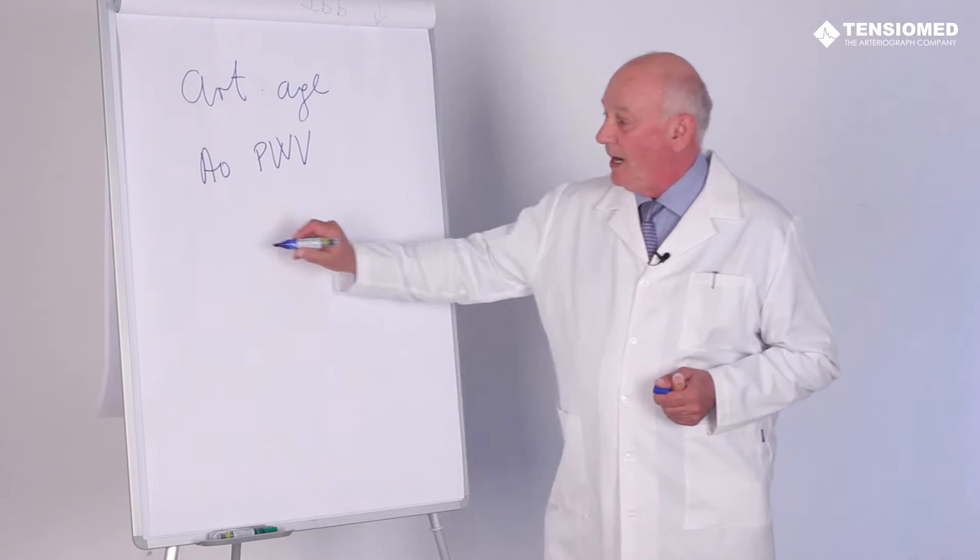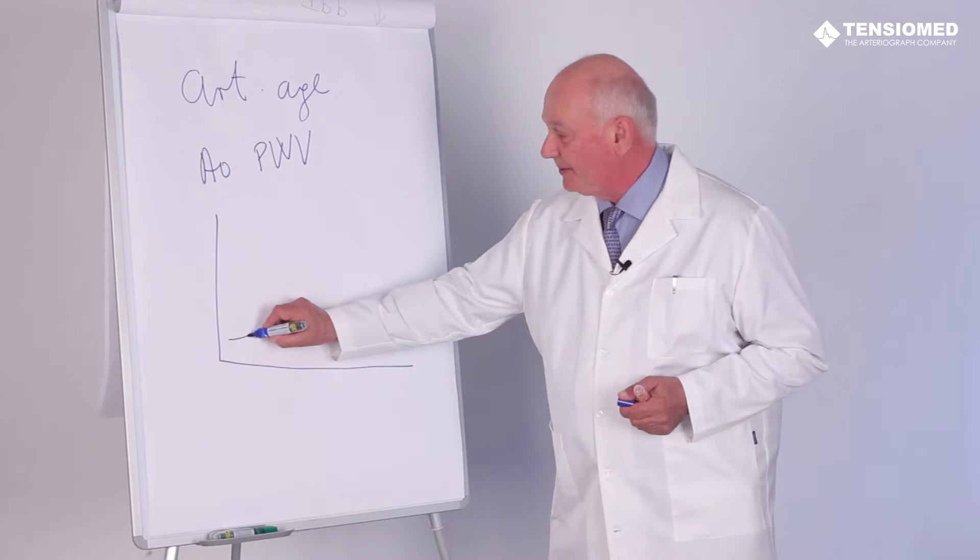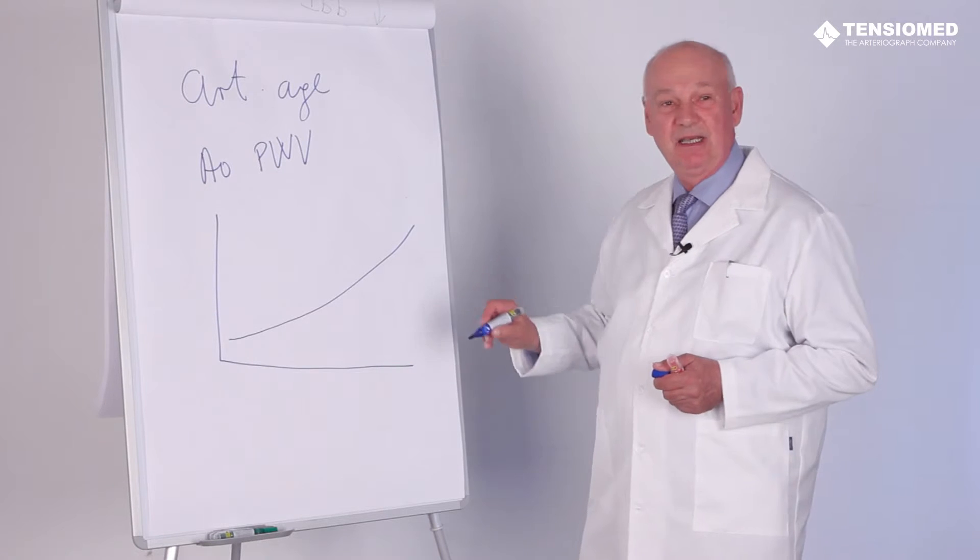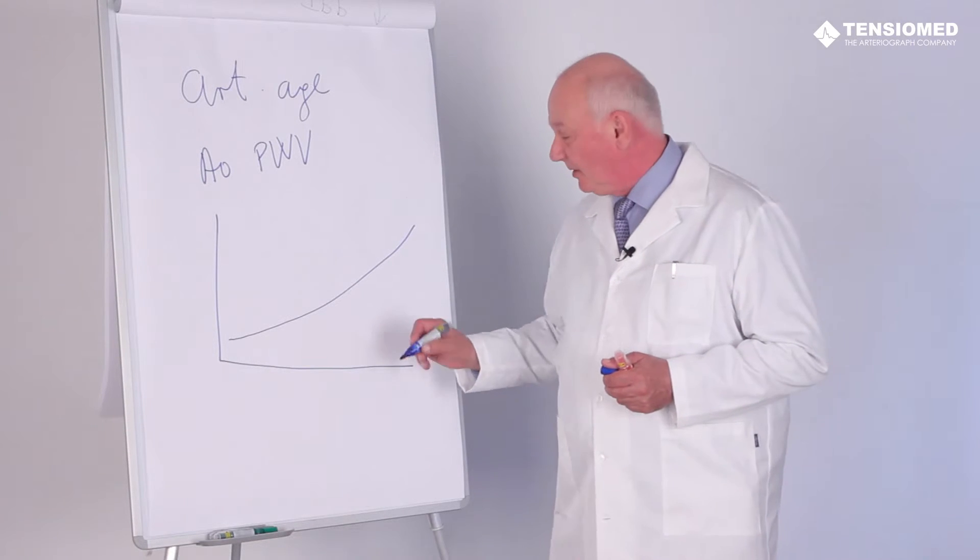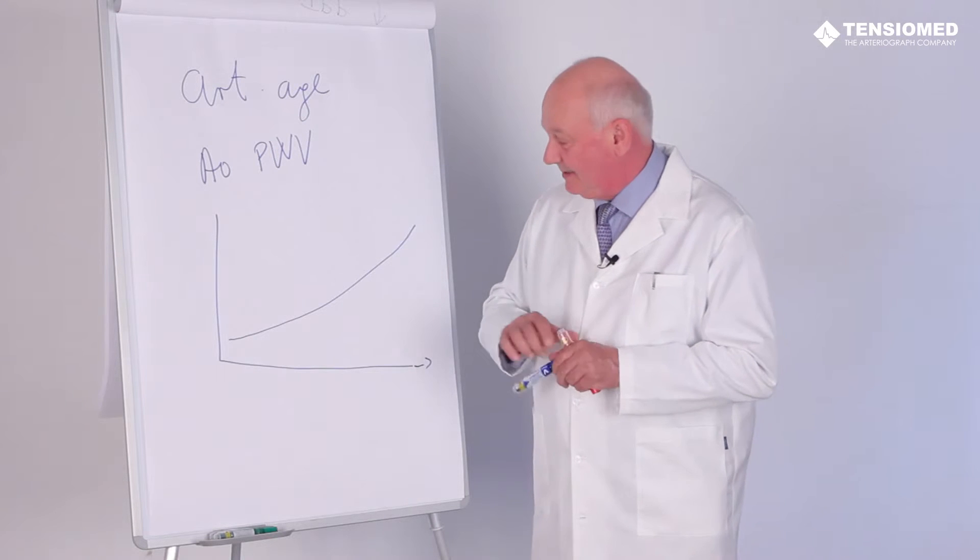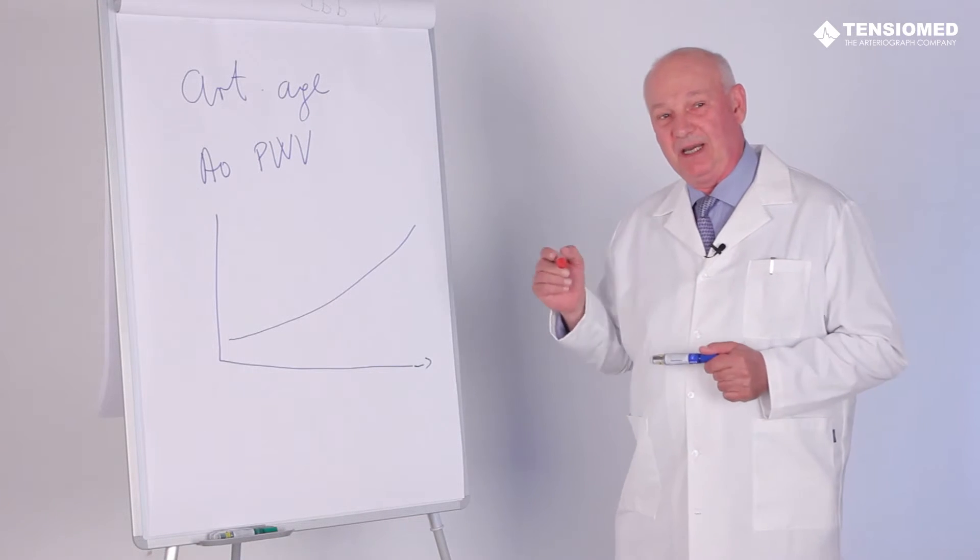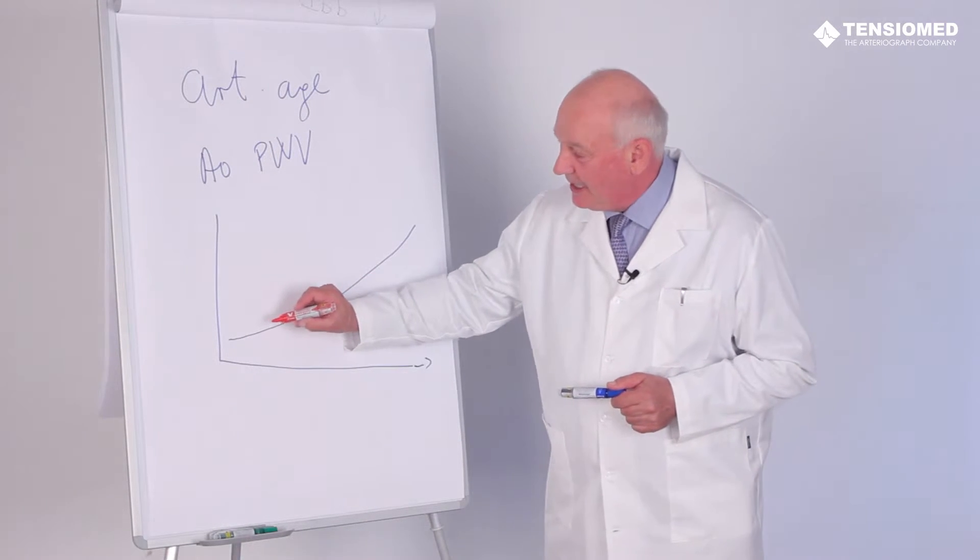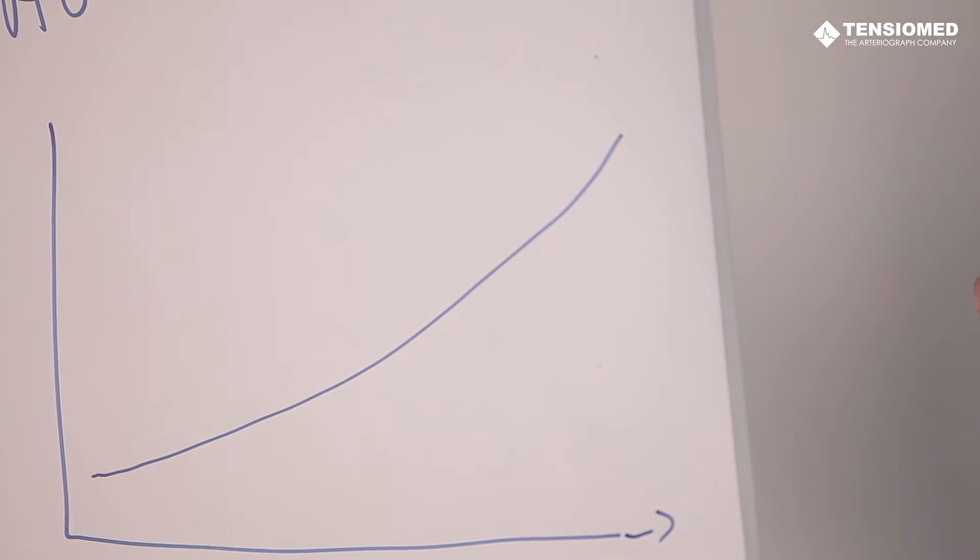Why? Because we know very well that aortic pulse velocity is getting higher and higher according to our age. However, the speed of vascular aging or arterial aging varies individually.